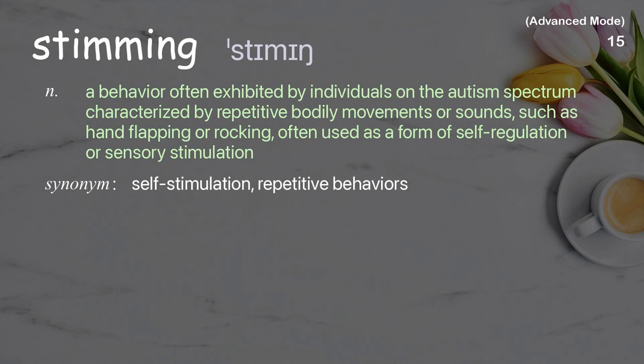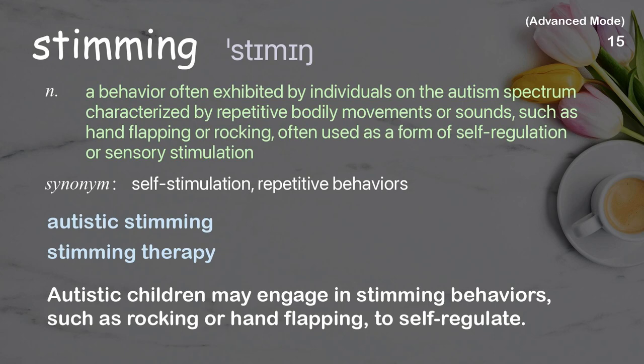Stimming. A behavior often exhibited by individuals on the autism spectrum, characterized by repetitive bodily movements or sounds, such as hand flapping or rocking, often used as a form of self-regulation or sensory stimulation. Examples: Autistic stimming. Stimming therapy. Autistic children may engage in stimming behaviors, such as rocking or hand flapping, to self-regulate.